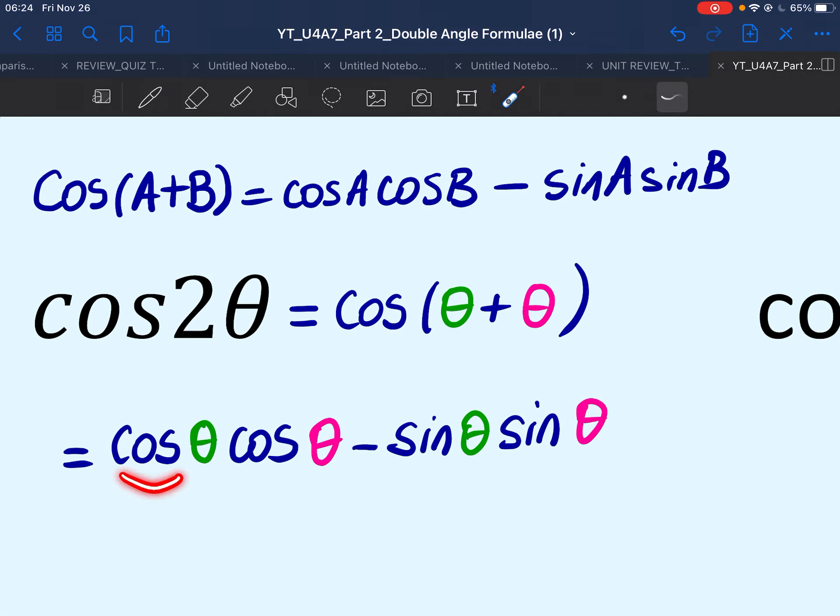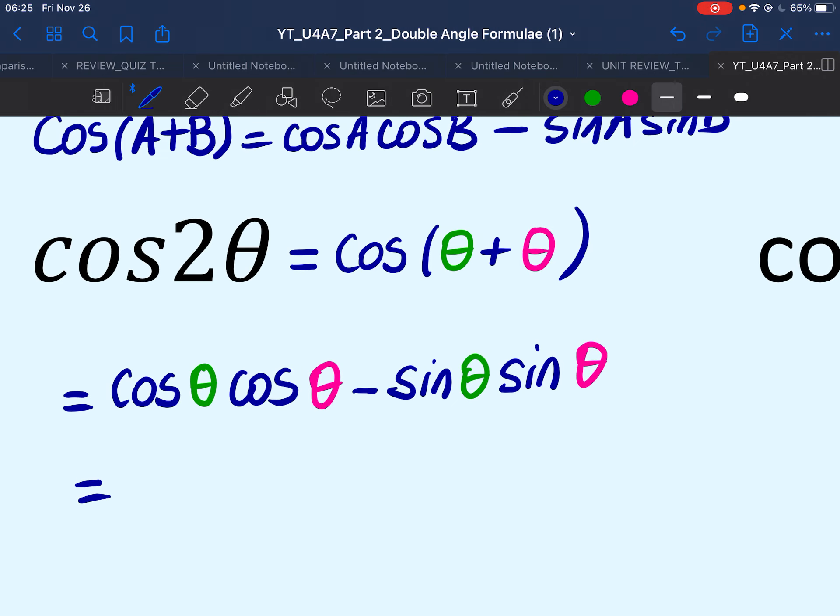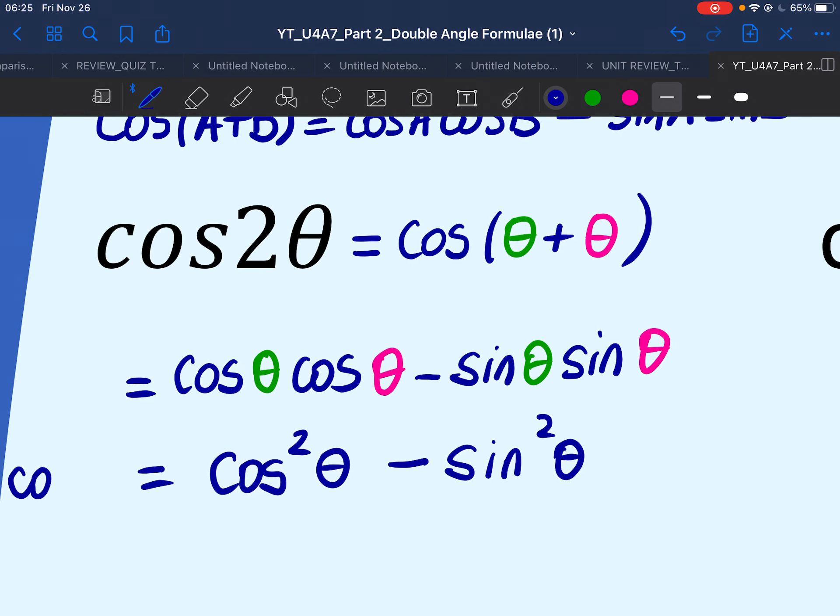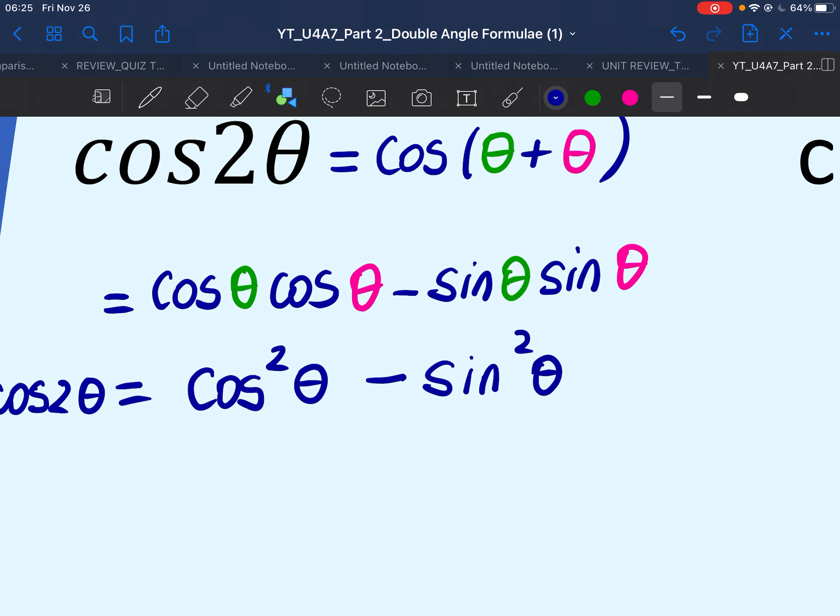As you can see, cos theta times cos theta is two terms, exact same terms, multiplying itself. So that makes cosine square theta. And sine theta times sine theta is sine square theta. Cos 2 theta, everyone. Let's box it up.